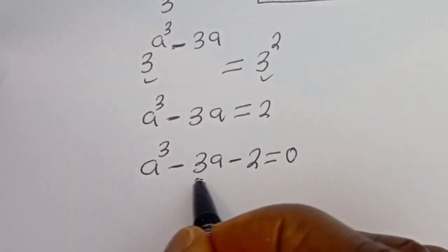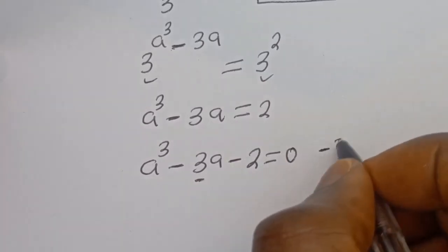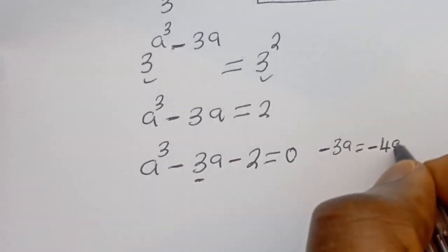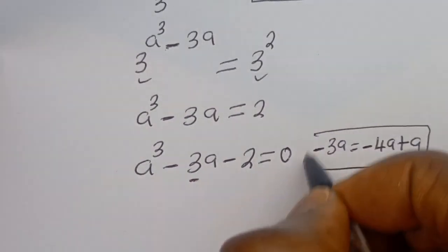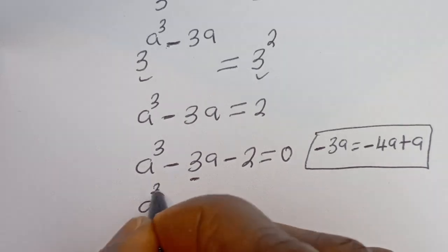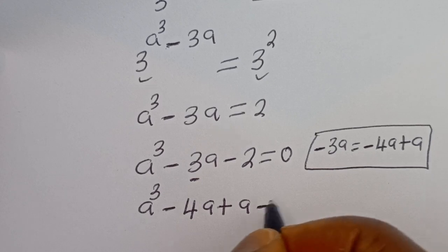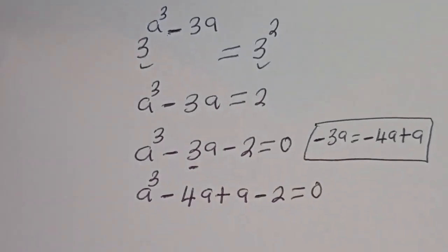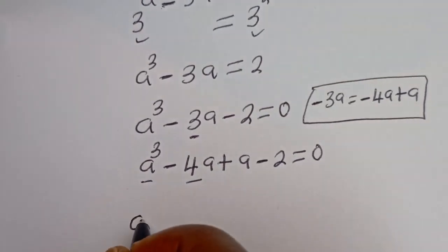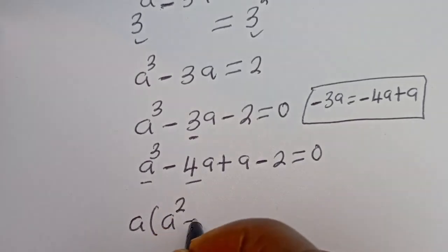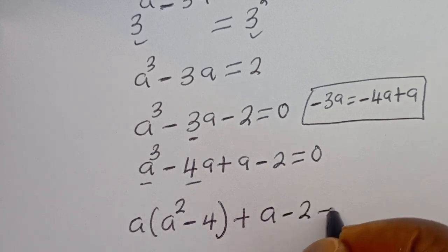Now let's transform this minus 3A. This minus 3A can be written as minus 4A plus A. We can substitute here: we have A to the power of 3 minus 4A plus A minus 2 is equal to 0. Here we can factor A out: we have A times the bracket A squared minus 4, plus A minus 2, is equal to 0.